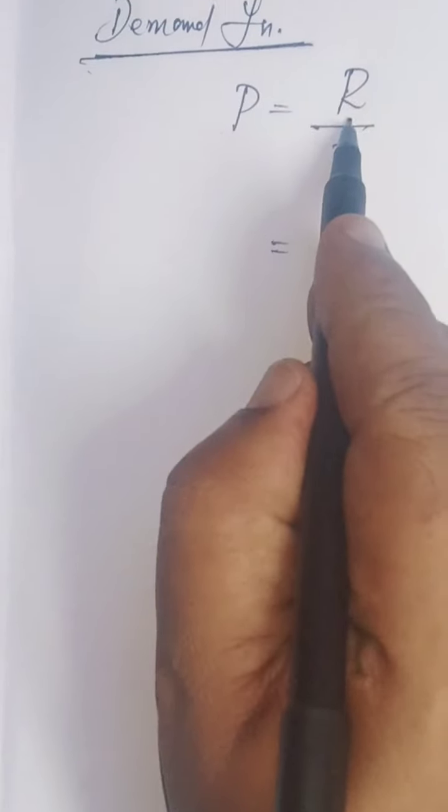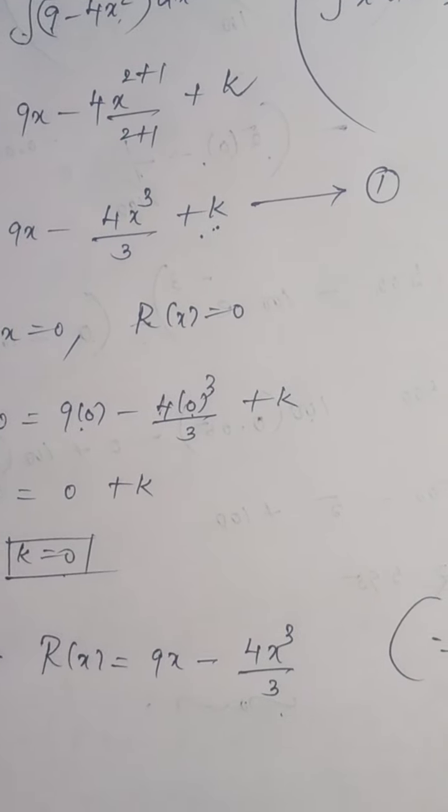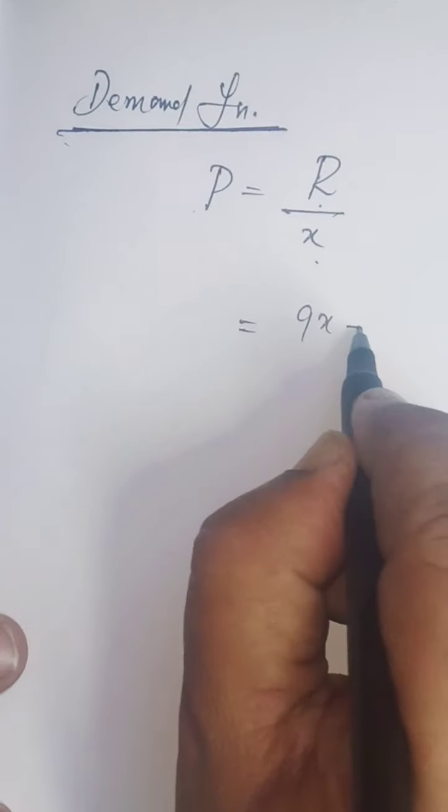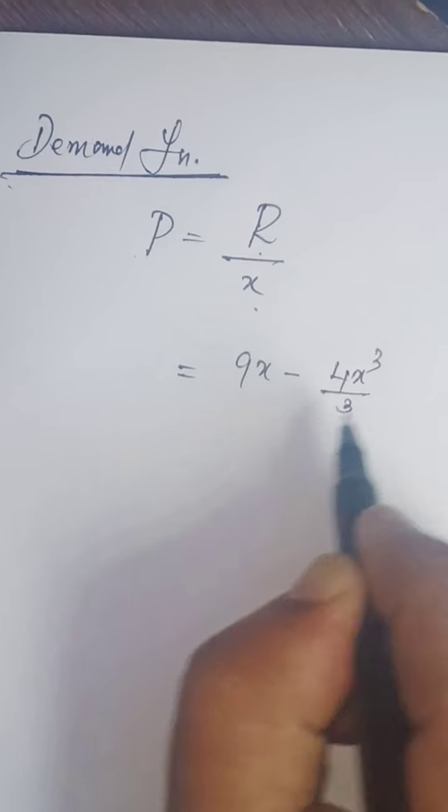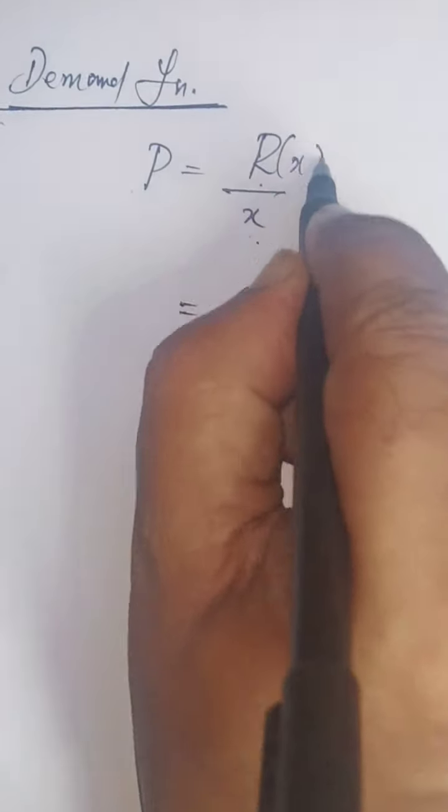Here it is (9x - 4x³/3) divided by x. P and P(x) are the same. Just divide: 9x by x minus 4x³/3 divided by x.